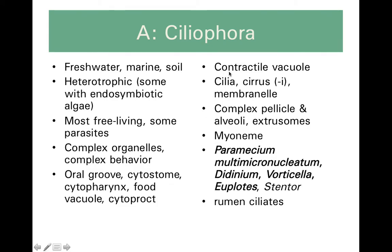We also talked about cilia-bearing last semester, especially in regards to the contractile vacuole. In ciliophora that live in freshwater, this is important for making sure that you don't get diluted to death, because the semi-permeable membrane can allow water to enter the cell and make you swell up. Cilia can be arranged in different ways — compacted into structures called cirri, or ringing the cytostome in a structure called a membranelle. Like the apicomplexans, they have a pellicle with alveoli and can produce extrasomes.